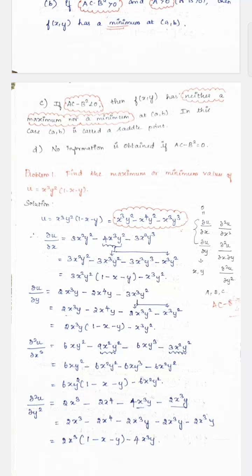After finding A, B, and C, the next step is to compute AC - B². If AC - B² is greater than 0, we proceed; otherwise we stop. If AC - B² > 0, we check whether A is less than 0 or greater than 0. If it is less than 0, we conclude it is a maximum; if greater than 0, we conclude it is a minimum. We then substitute the critical point into the function to find the maximum or minimum value. This is the complete procedure.